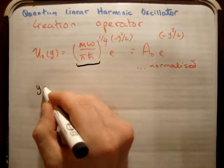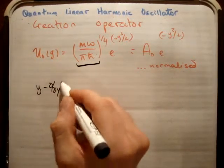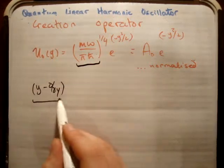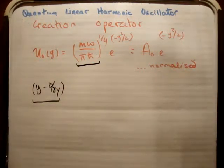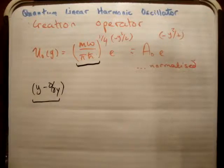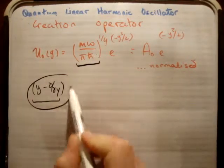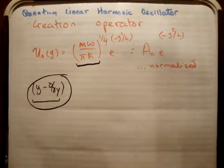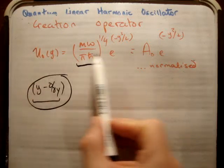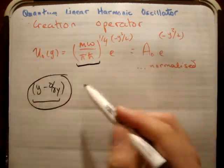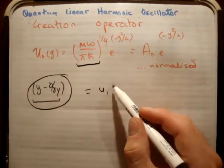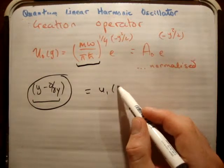So we also found out that our Y minus DDY operator, this operator here, was a raising operator. So what should happen is, if we apply this on the U0 wave function, we should get the U1 wave function. We should get the U1 of Y.